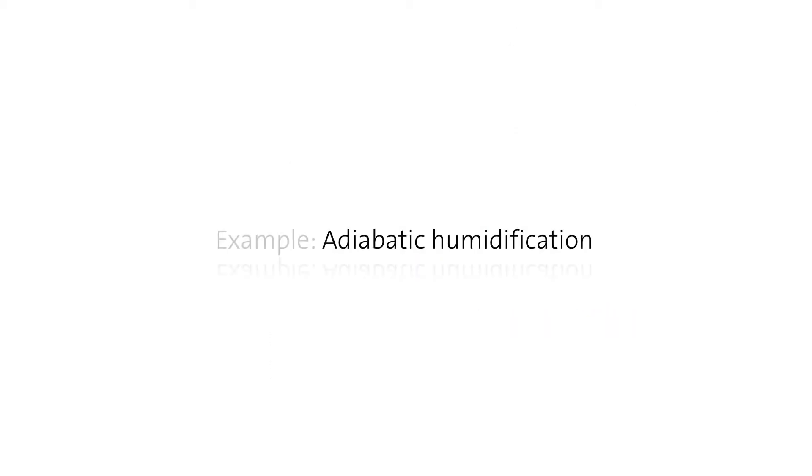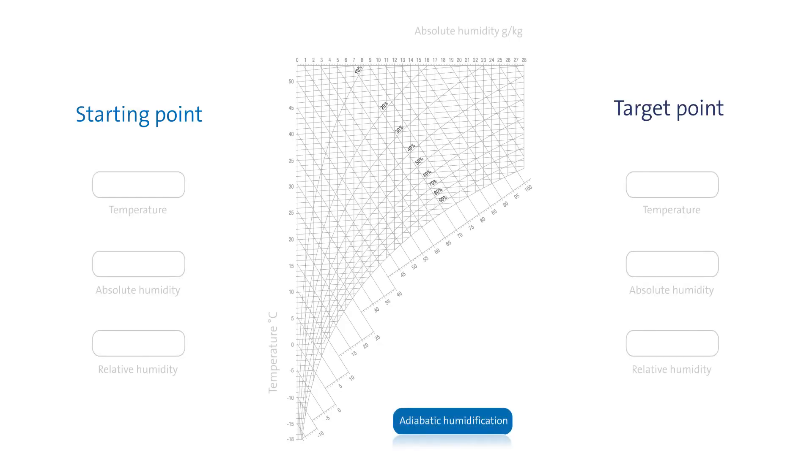Here is an example of how an adiabatic humidification process can be depicted in an HX diagram. Let's take as a starting point a temperature of 25 degrees Celsius, an absolute humidity of 6 grams for each kilogram of air, and a relative humidity of 31%.